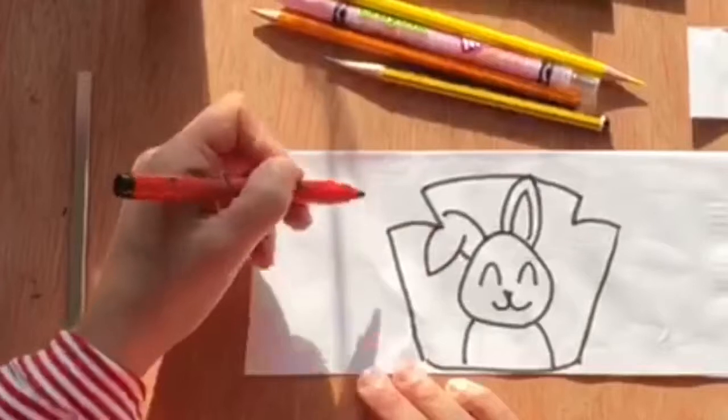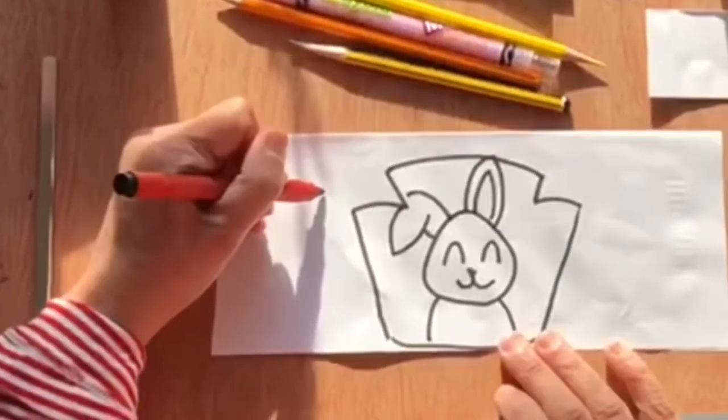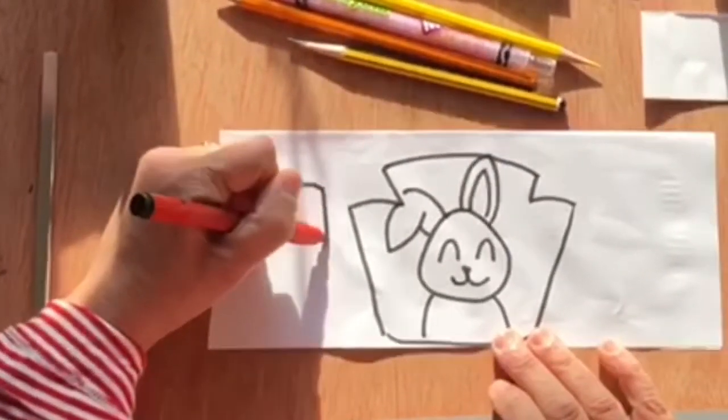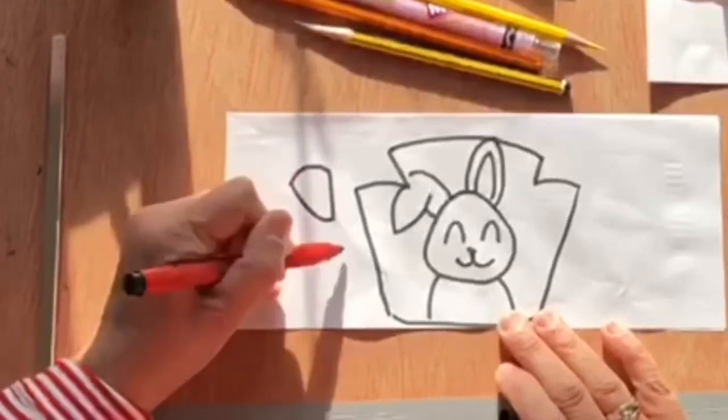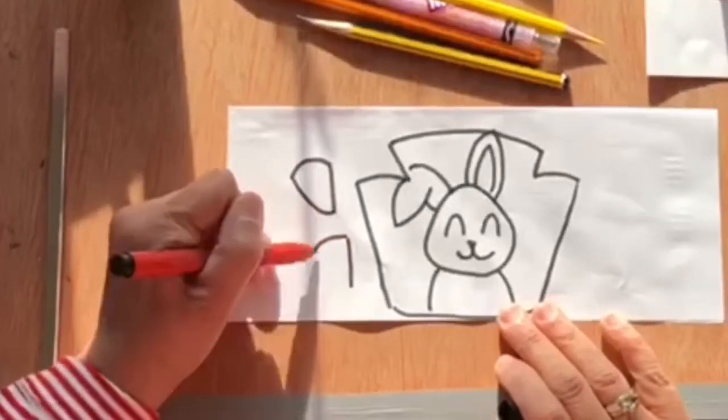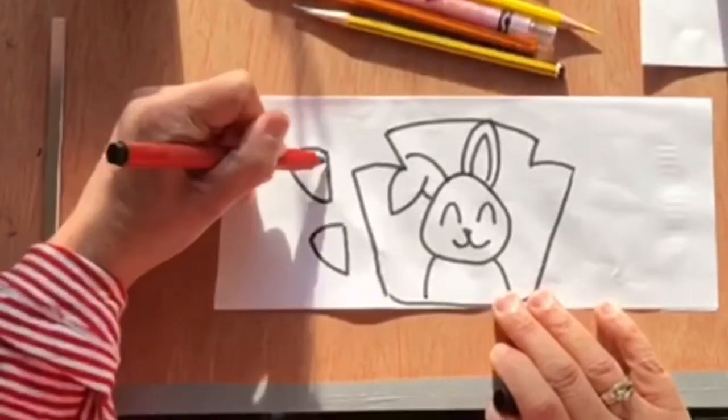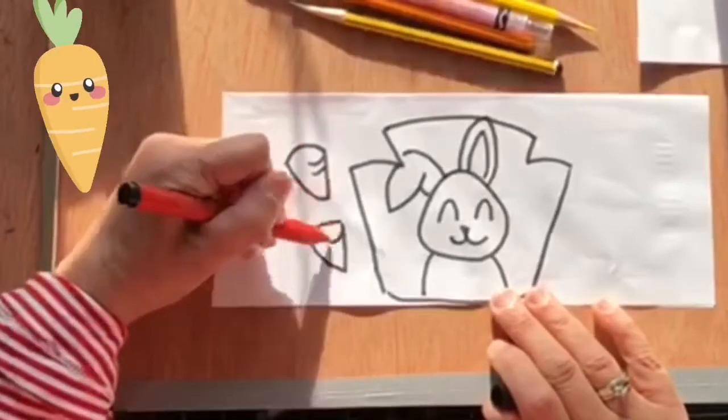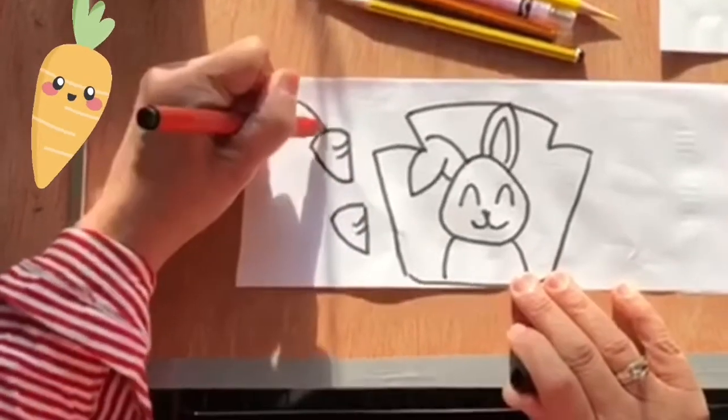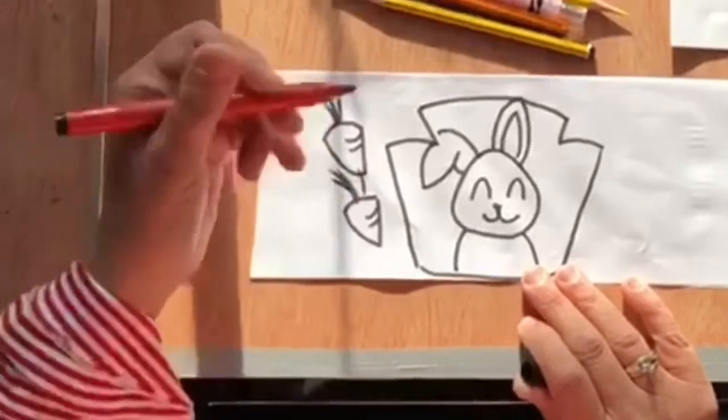Because it is a bunny, we are gonna add some decoration here. Something that bunnies like a lot. So we are gonna add some carrots. You see that the carrots look a bit like triangles. Then we add some lines, and the part that we are gonna have on the top that is gonna be green.